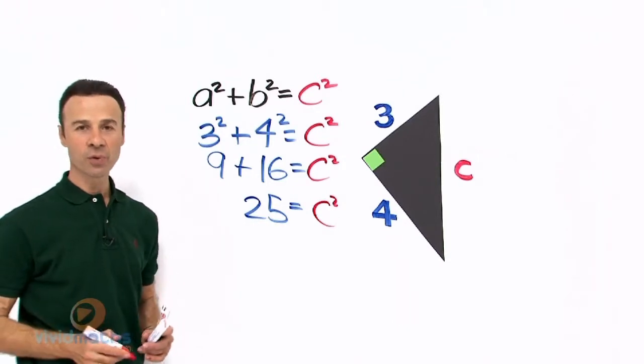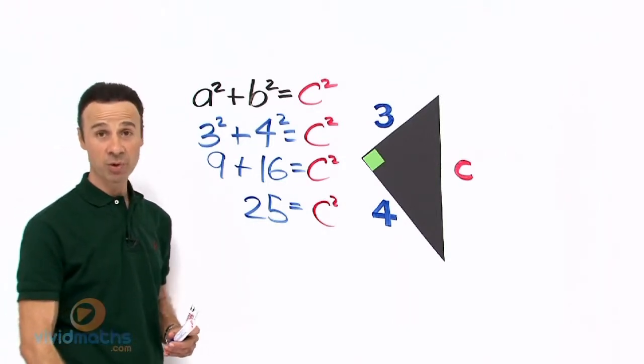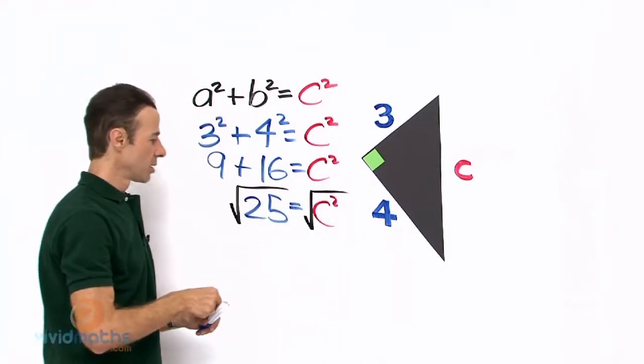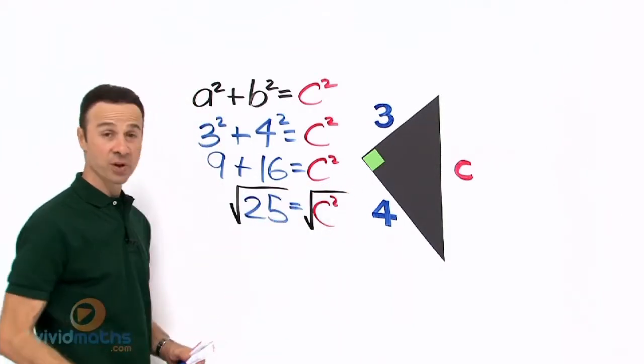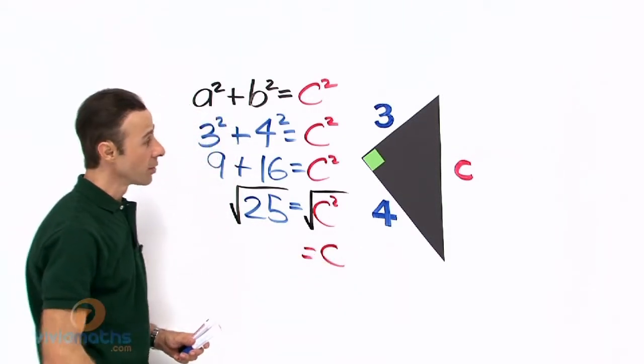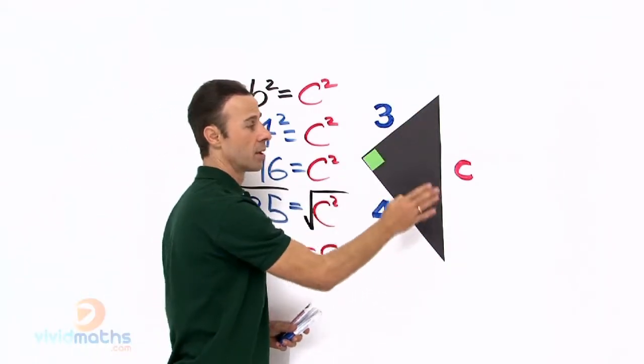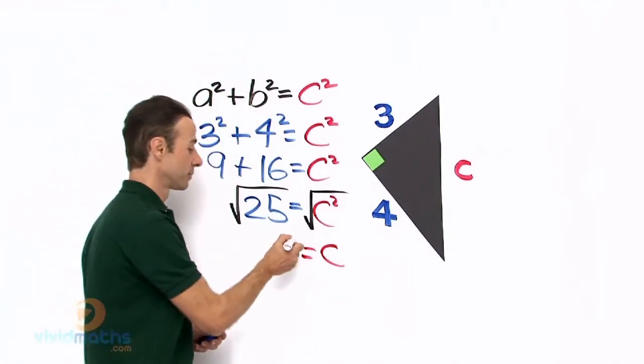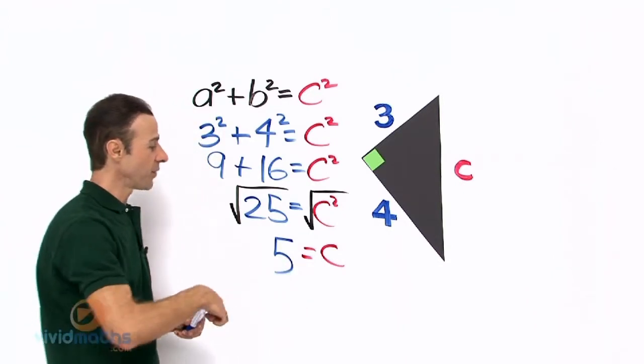We want to get it by itself without being squared, so let us square root both sides. So the c² reverts back to just being c, and that equals the hypotenuse, which equals the square root of 25, which is 5.